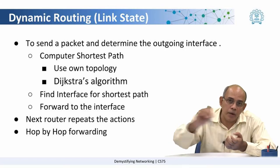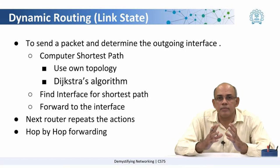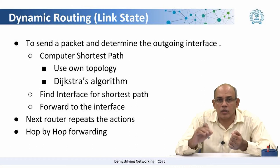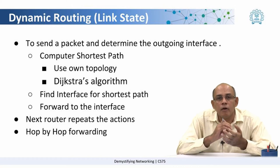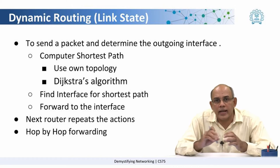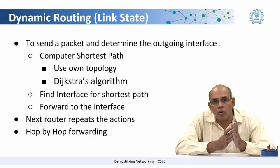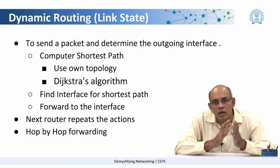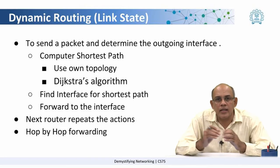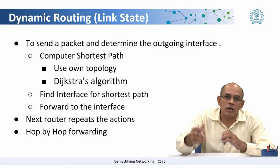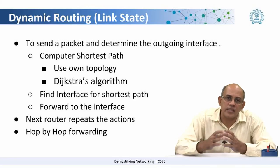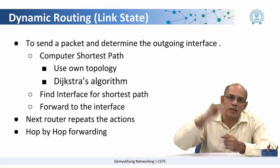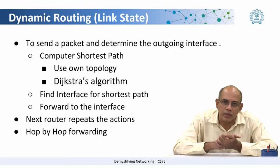Does the router put the entire path on the packet? No. Having computed the shortest path, it simply forwards the packet along the appropriate outgoing interface, so that the next router can carry out the same computation. In this way, the packet is forwarded hop by hop through the network.